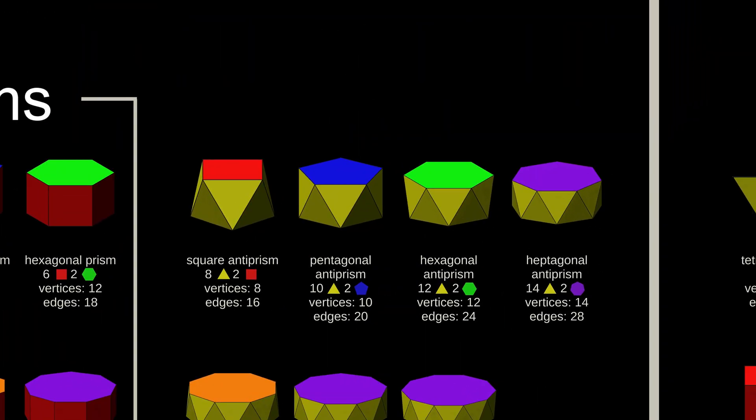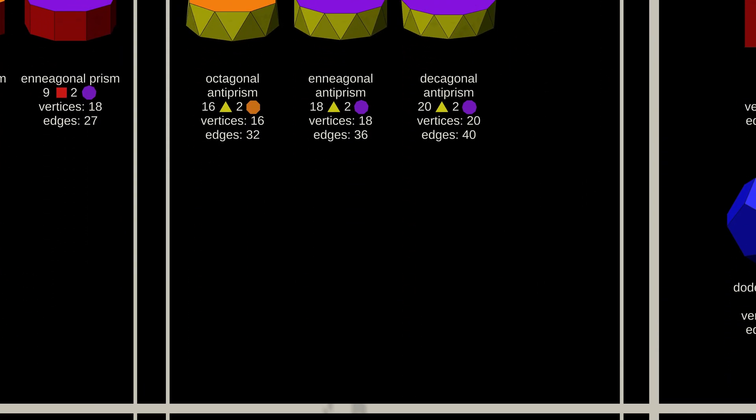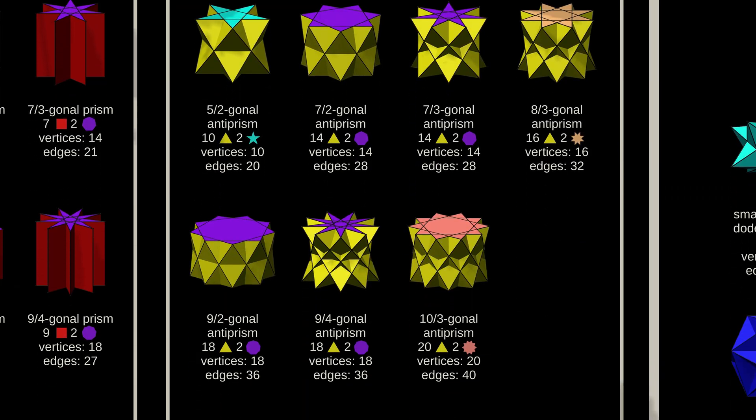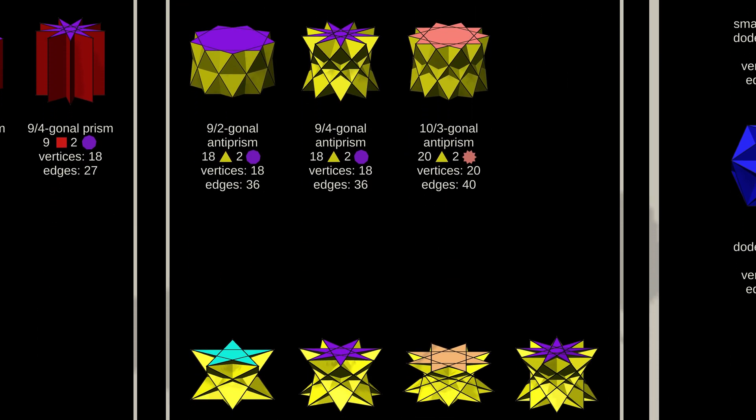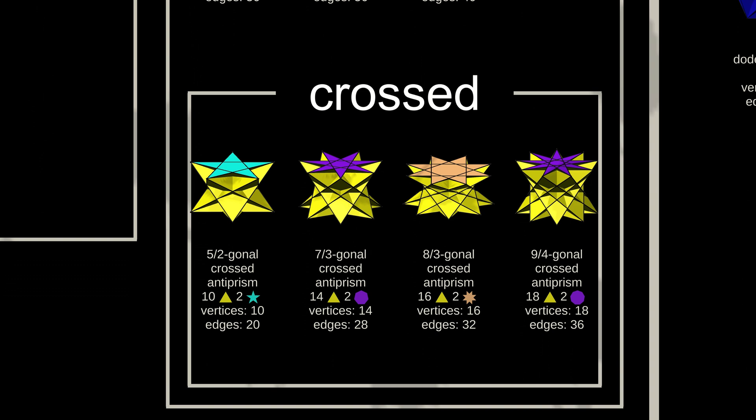Anti-prisms are similar, but with triangles instead of squares. Non-convex anti-prisms also come in a third variety, the crossed anti-prism, which has backward-facing faces.